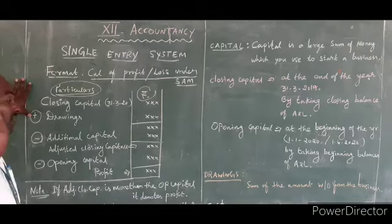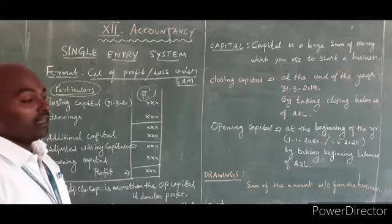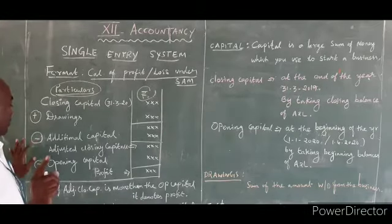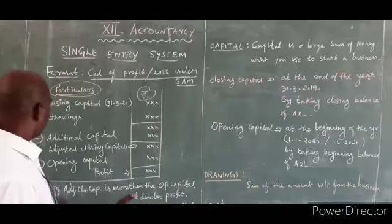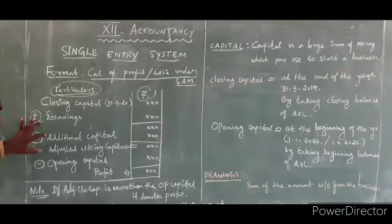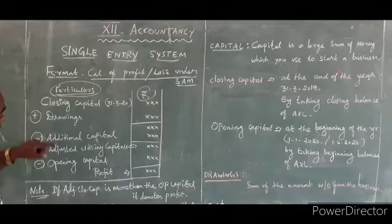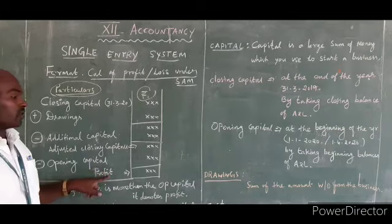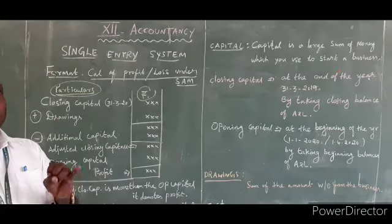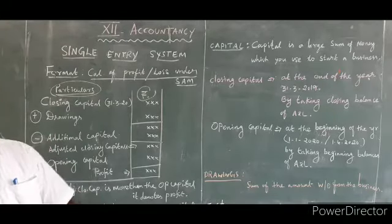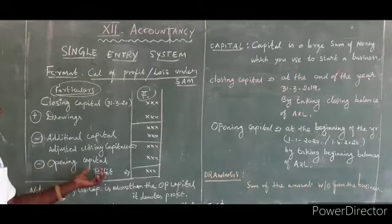There are 5 steps. Step 1: closing capital. Step 2: add drawings. Step 3: less additional capital. Step 4: less opening capital. Step 5: if the adjusted closing capital is more than the opening capital, the answer will be profit.